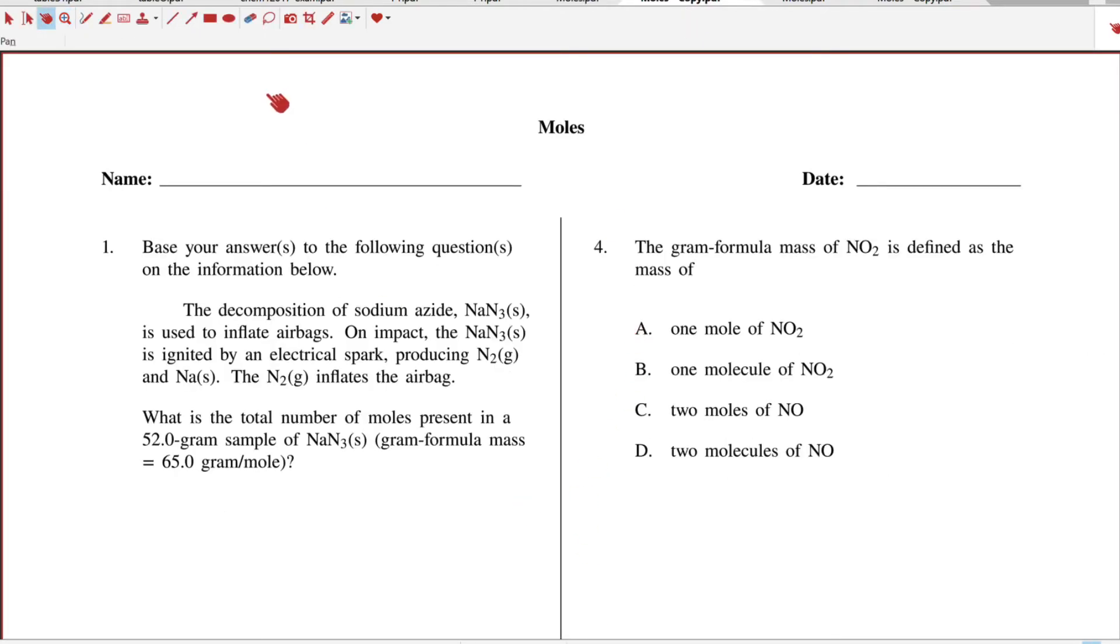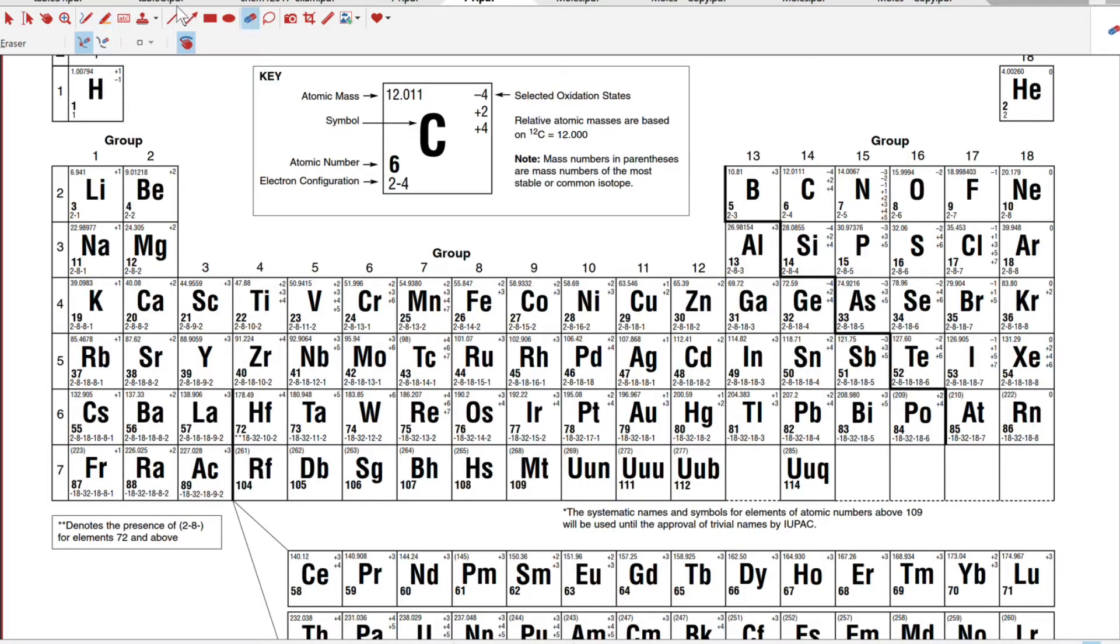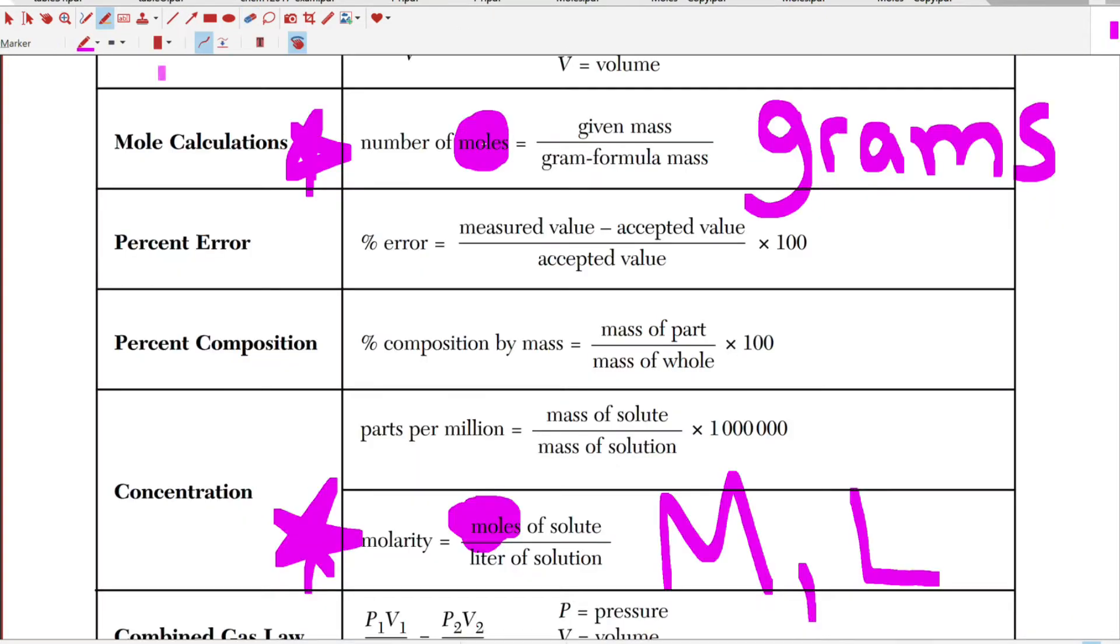We're going to start with number one here. I'm going to go right to the question. What is the total number of moles? So right away I see moles present and I see grams. Because I see grams, if I go to periodic table Table T in the back, I'm going to use this one: given mass divided by gram formula mass.